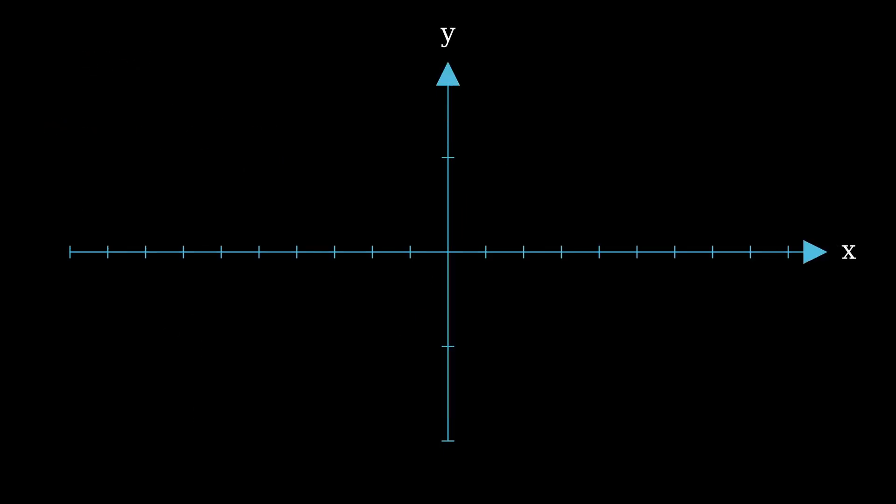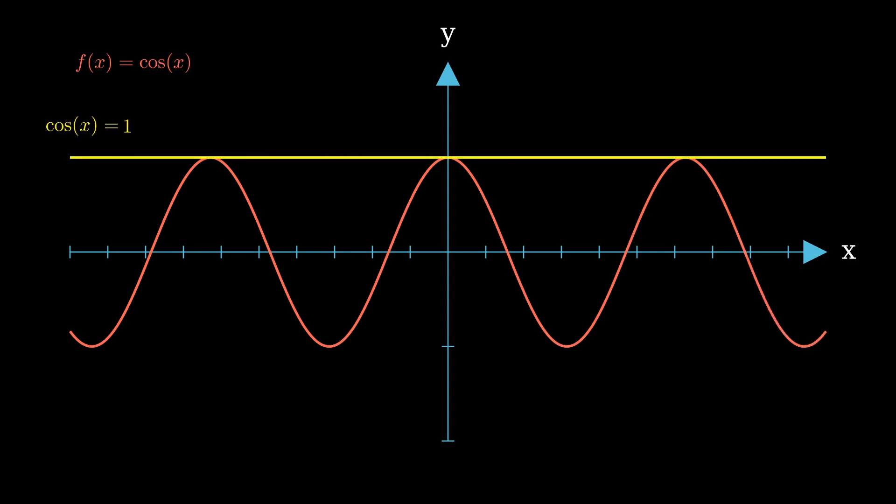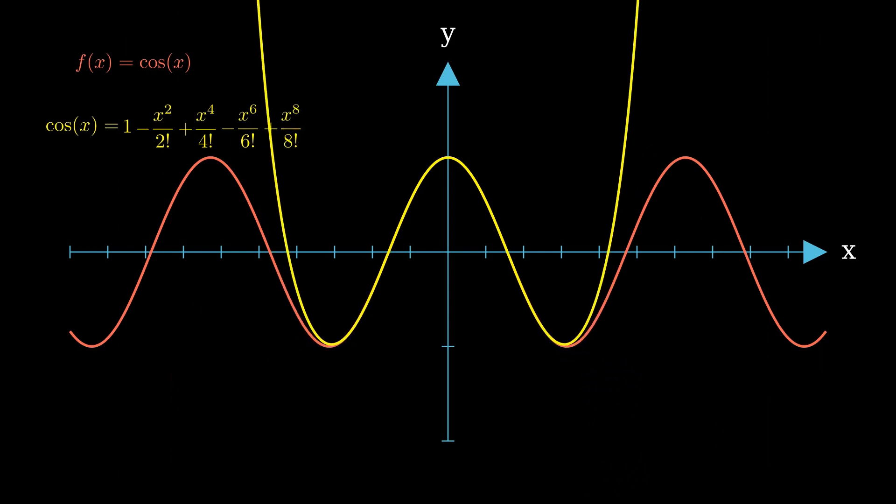So taking a look at another graph, it turns out that you can do a similar Maclaurin series expansion for the cosine of x function. Our first polynomial places us at 1 which isn't the greatest approximation, however just as before the more polynomials we add to our expansion, the more accurate our approximation becomes.